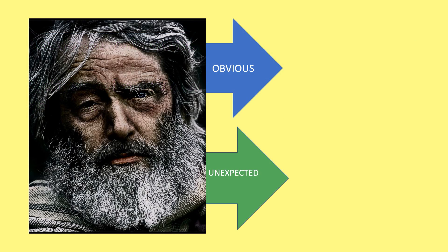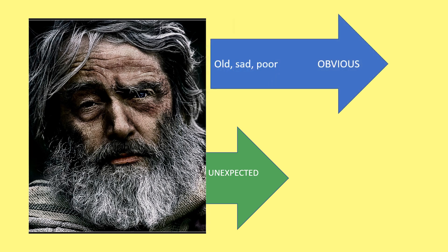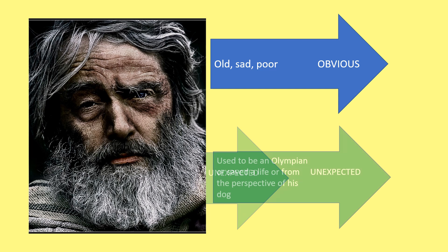Here is a picture of an older man. What are the obvious and unexpected things that you could say about it? Obvious things might be that he is old, sad or poor as he doesn't look very well looked after. Something unexpected might be that he used to be an Olympian or saved a life, or you could write the story from a new perspective such as that of his dog.